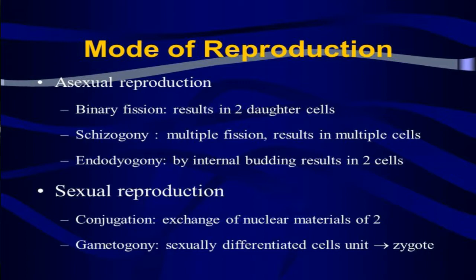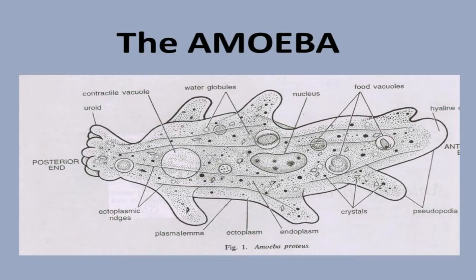Schizogony means multiple fission — one organism produces multiple cells. Endodiogeny is reproduction by internal budding, resulting in two cells. In sexual reproduction in some protozoans, conjugation occurs — there is an exchange of nuclear material between two individuals. Another form is gametogony — sexually differentiated cells unite to form a zygote.